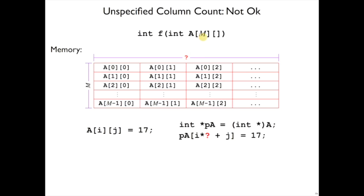So the C compiler will just reject a program that was written this way, providing the size of the first dimension but not the size of the second dimension.